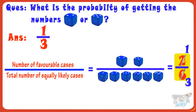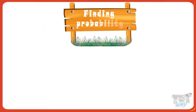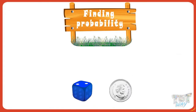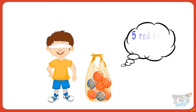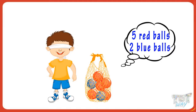So, we have learned how to find probabilities of various outcomes when we toss a single die or coin. Now, let's learn how to find probabilities of something else. We have a bag of balls, where we have 5 red balls and 2 blue balls. We take out a ball without looking into the bag. So, let's find out the probabilities in different cases.